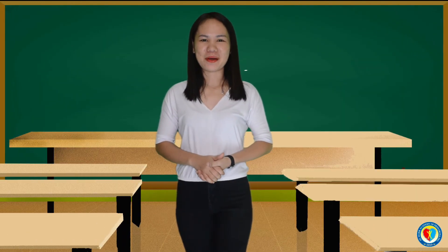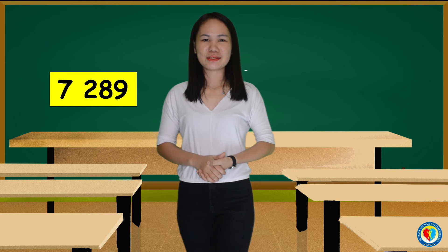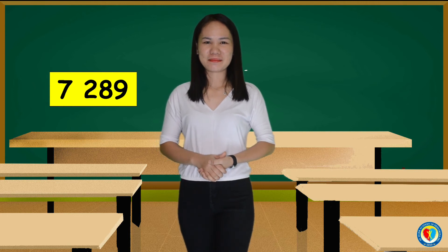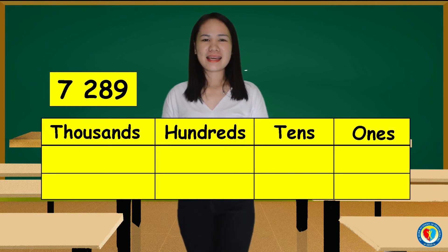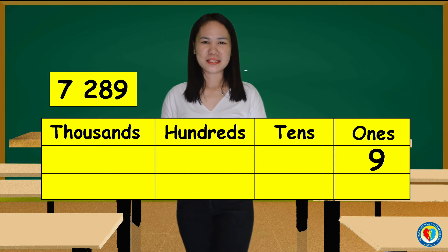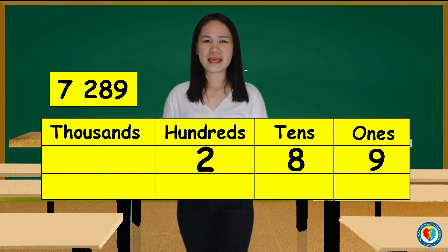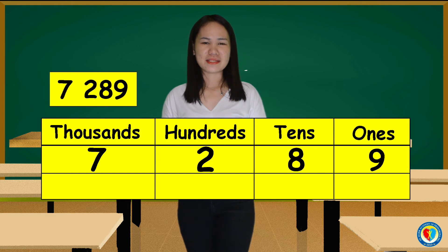Another example. We have 7,289. Now, let us take a look at the place value of each digit. The number 9 is in the ones place. Number 8 is in the tens place. Number 2 is in the hundreds place. And number 7 is in the thousands place.